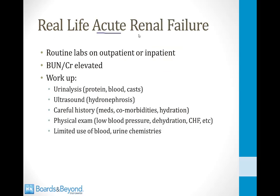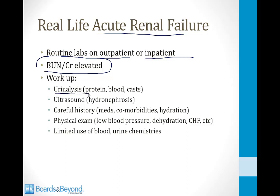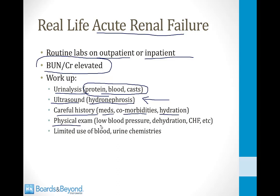In practice, acute renal failure is usually detected when routine labs show elevated BUN and creatinine. The workup includes urinalysis to look for protein, blood, and casts — signs of glomerular problems. A renal ultrasound is almost always obtained because hydronephrosis indicates obstruction, an easily reversible cause. A careful history, physical exam for dehydration or CHF, and blood and urine chemistry help identify the cause.